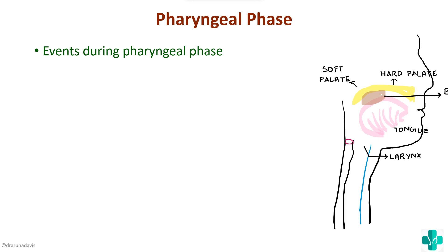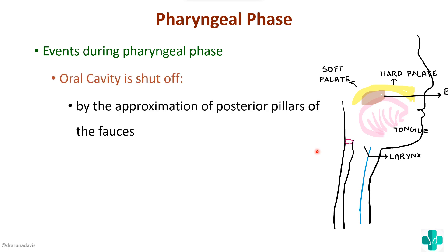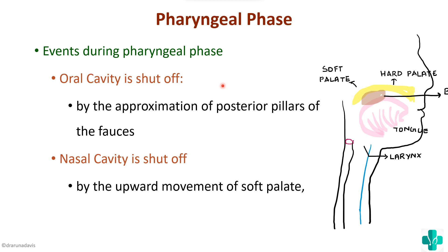The bolus of food should go into the esophagus. It should not go forward back into the oral cavity, up into the nasal cavity, or down into the respiratory cavity. During swallowing, movements occur so that all these other cavities are shut off and only the esophageal route is opened. To cut off the oral cavity, the posterior pillars of the fauces are approximated so the bolus will not go back. To cut off the nasal cavity, the soft palate moves upward to a more horizontal position so the bolus will not enter the nasal cavity.